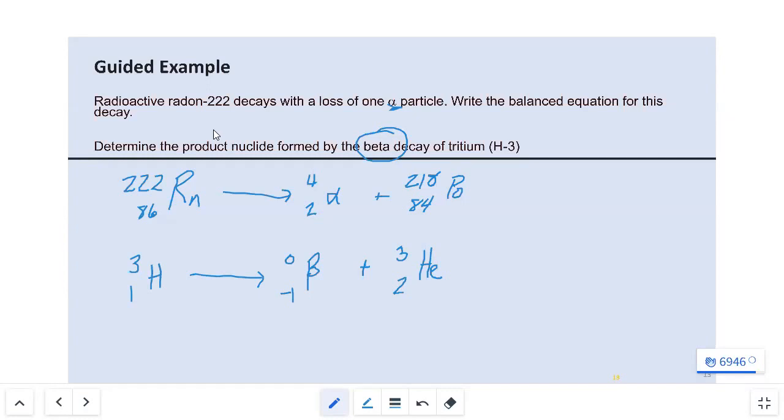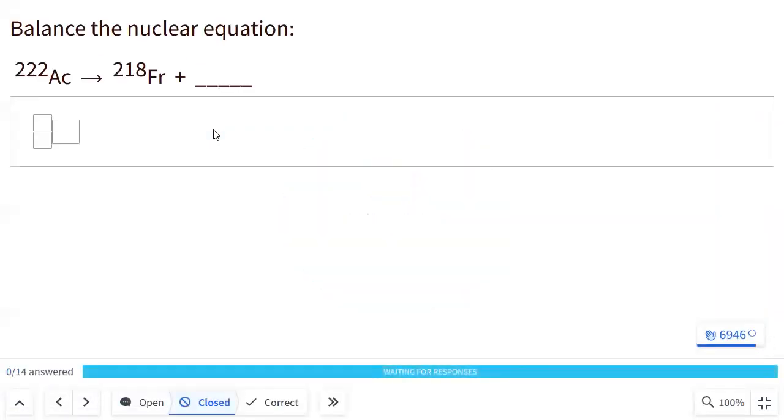Any questions with these two nuclear examples? Alright. You know what time it is then. It's time for you to start doing this on your own. Balance this nuclear equation. Actinium-222 decays into francium-218 and what? So fill in the three blanks on your Top Hat response.